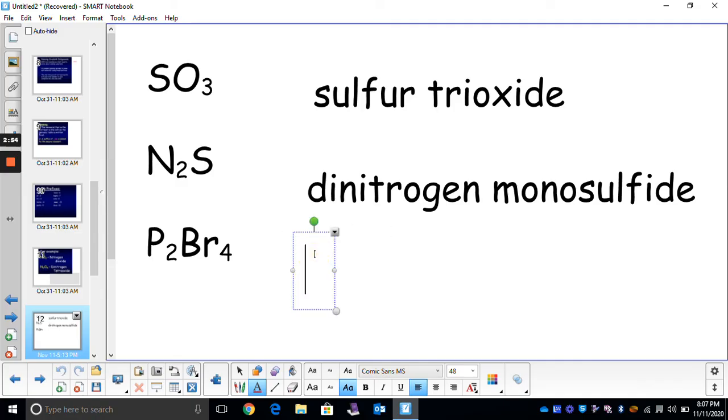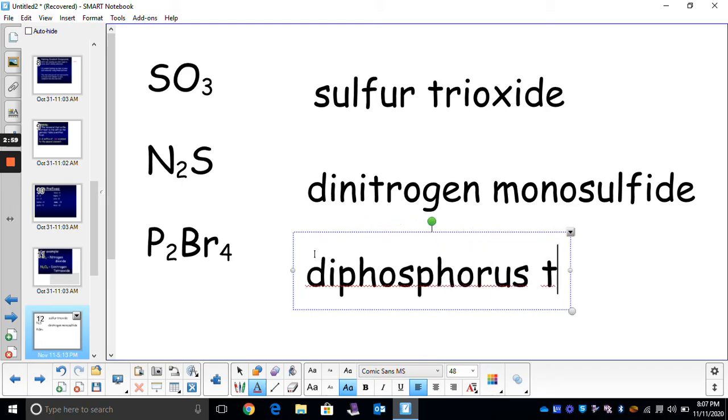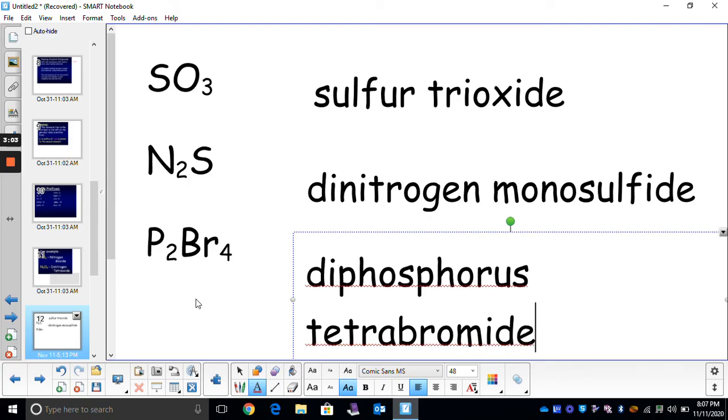Our last one, it's diphosphorus tetrabromide. Again, when we have covalent bonding, those molecules, we have to label or explain each of these subscripts in our name. It's a little bit different than ionic. A little bit more detail.